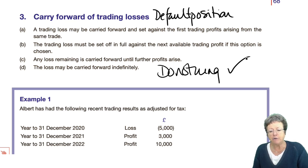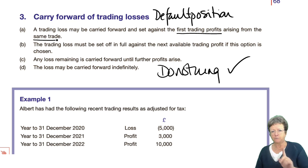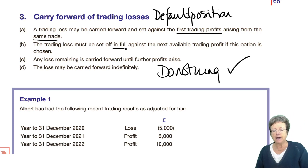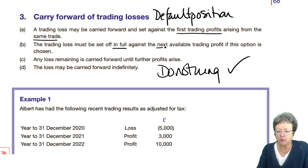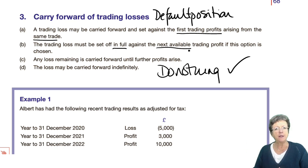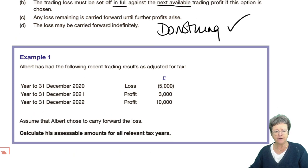A trading loss may be carried forward and set against the first available trade profits from the same trade — it must be the same trade. The trading loss must be set off in full against the next available profits; any remaining loss is then carried forward until future profits arise, and it can be carried forward indefinitely. So we have a little example here.